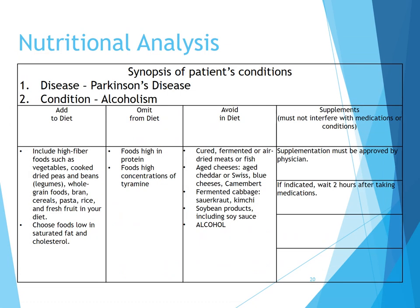For our nutritional analysis, since the patient has Parkinson's disease and suffers from alcoholism, we need to make sure he includes high-fiber foods such as vegetables, cooked dried peas and beans (legumes), whole grain foods such as bran, cereals, pasta, and rice, and fresh fruit. We want to choose foods low in saturated fat and cholesterol, and omit foods high in protein due to the medication and foods high in tyramine concentrations. Avoid cured, fermented, or air-dried meats or fish; aged cheeses such as aged cheddar, Swiss, or blue cheeses like camembert; fermented cabbage, sauerkraut, kimchi; soybean products including soy sauce; and absolutely no alcohol. Any supplementation must be approved by a physician, and we must wait two hours after taking medications before incorporating any supplementation.